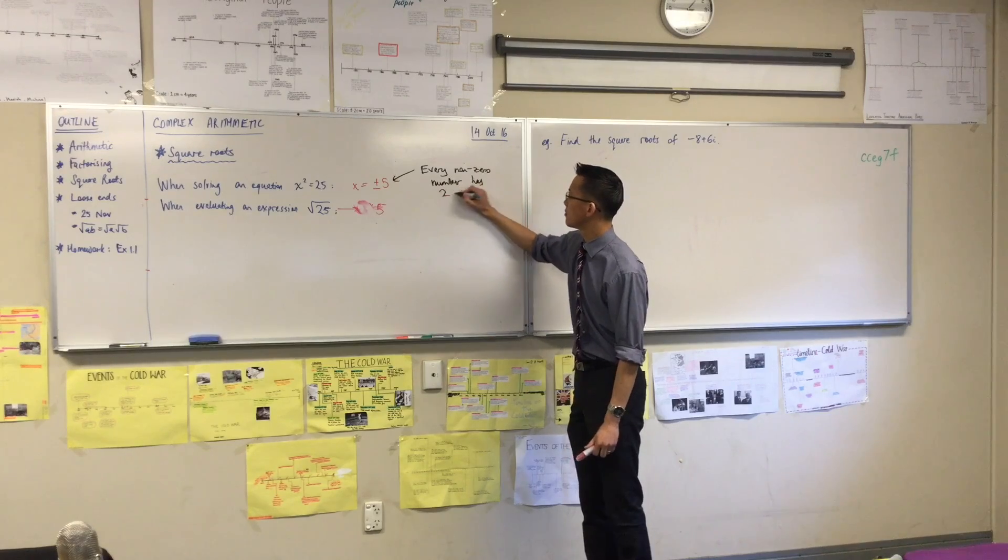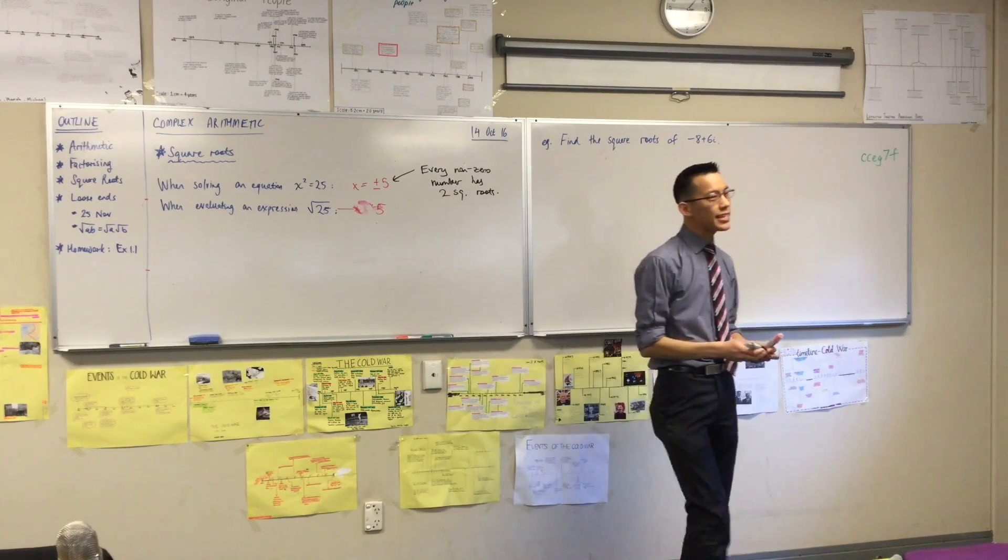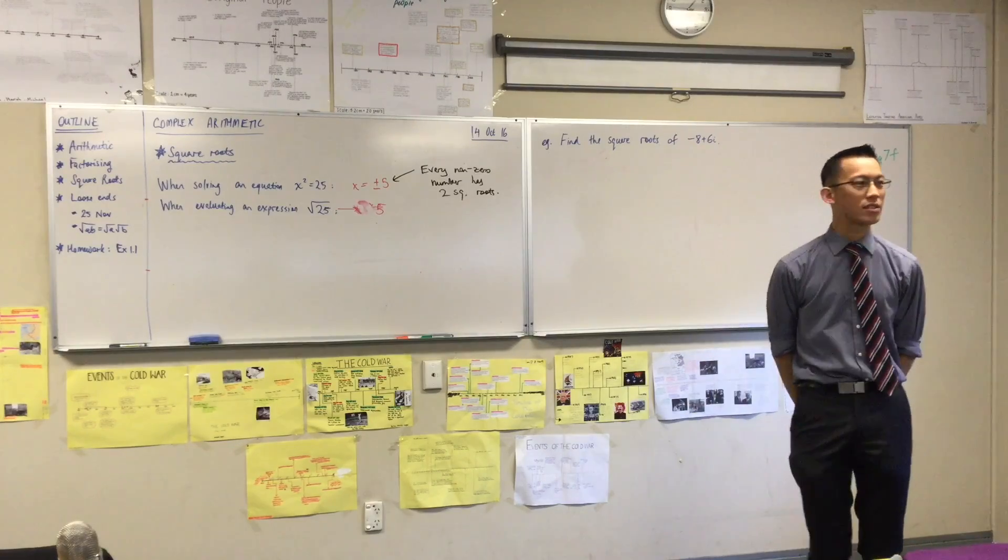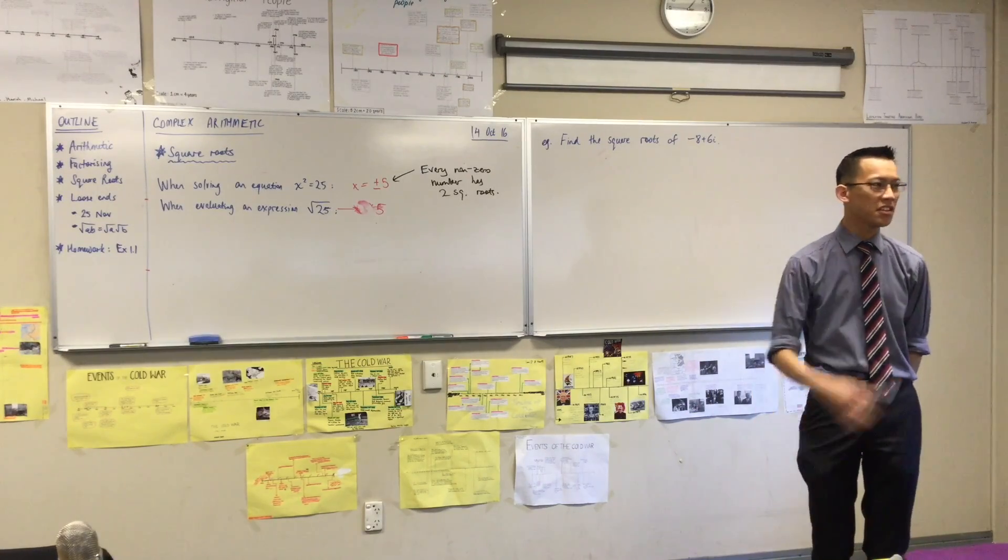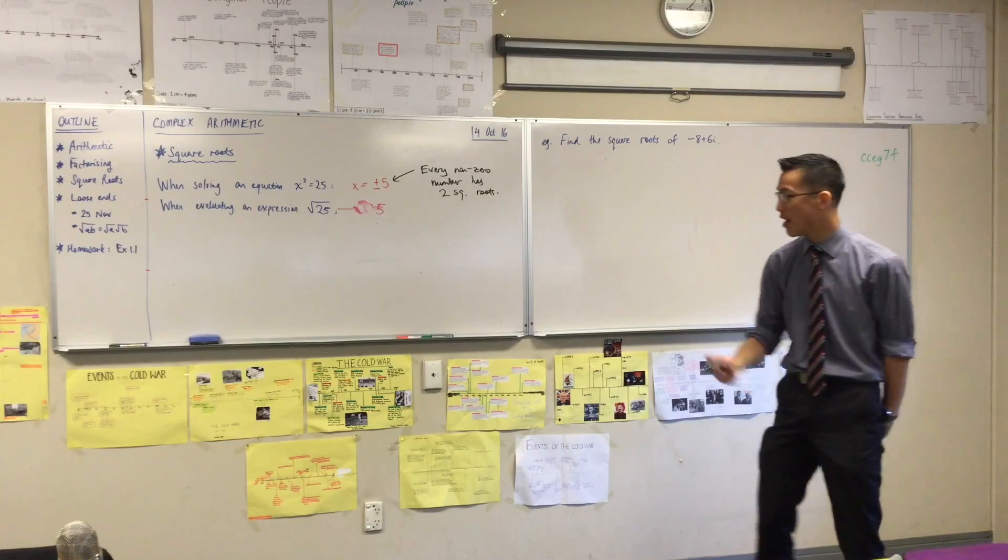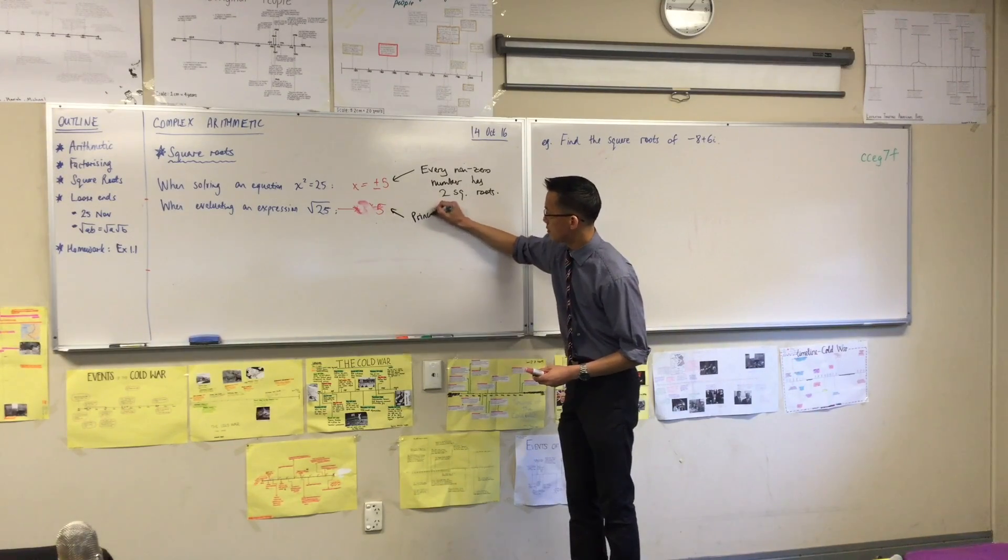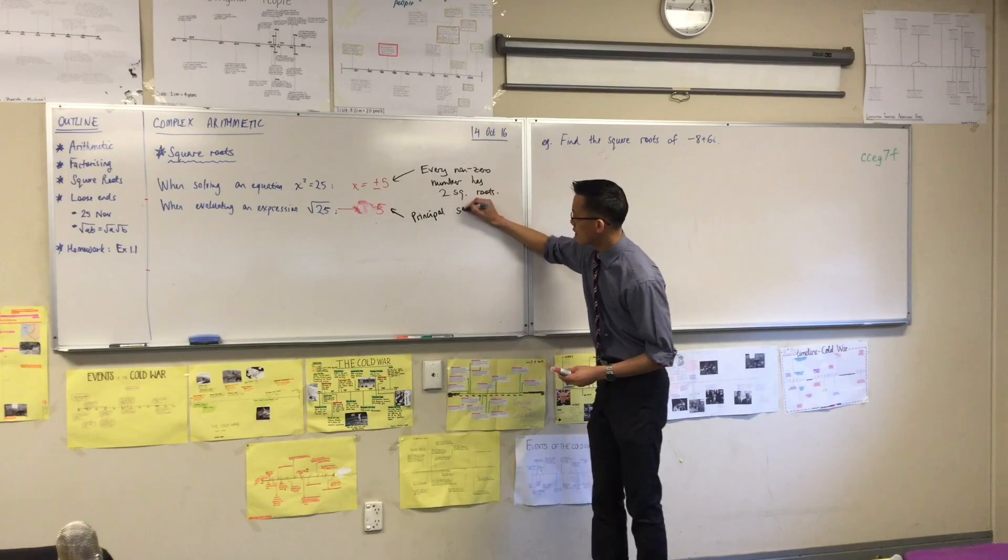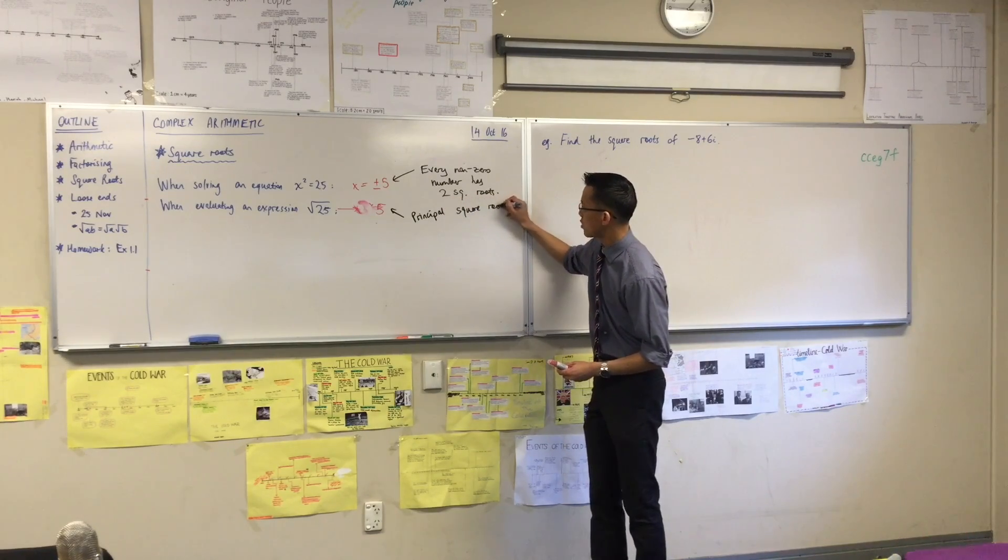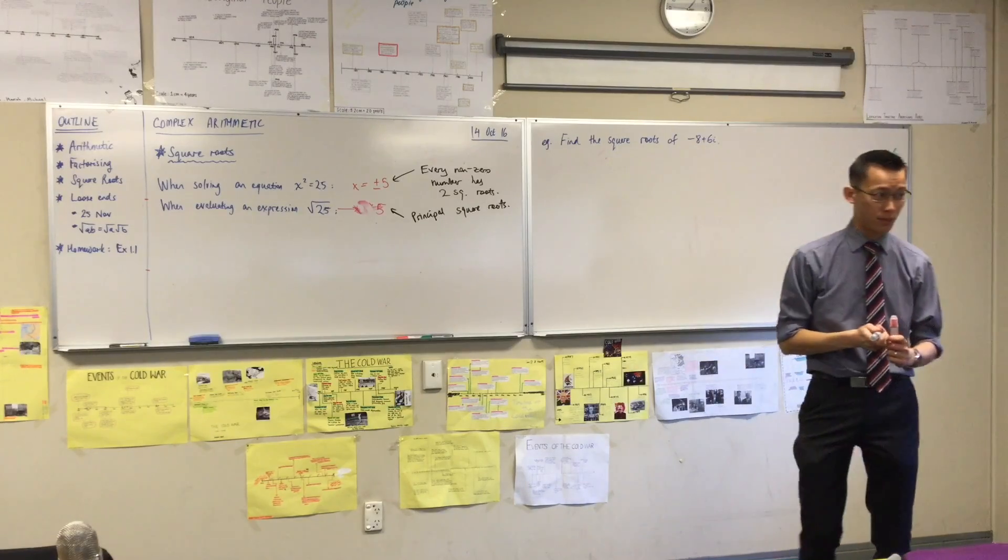So every non-zero number has two square roots, but we designate one of those square roots as the most important one. The one that you're like, okay, this is the one I usually mean, I most frequently mean, right? And we call that guy the principal square root. You're like, okay, we've got more than one. Which one's the one that you want to talk about most frequently? Let's call that one the principal one.